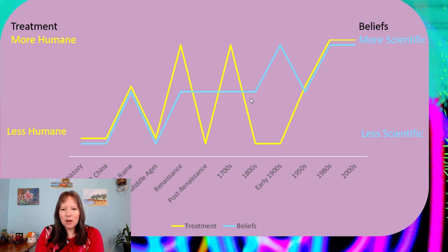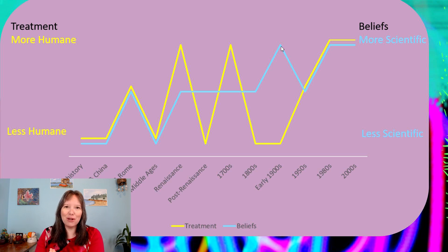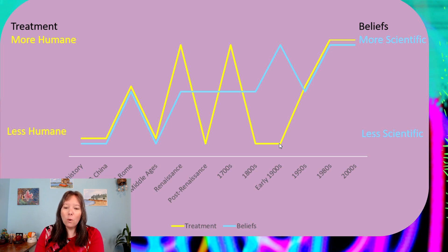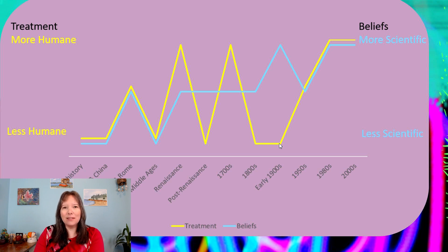When we get to the early 1900s, the blue and yellow lines diverge. We're rapidly getting a much more scientific viewpoint through breakthroughs in psychology and neuroscience — understanding that there might be an organic cause, perhaps due to the brain or hormones. But we moved quickly from the second phase of asylums to very forceful medical interventions, including lobotomies, electric shock therapy administered against consent, and forced sterilizations. Especially here in Alberta, forced sterilizations continued well past any other province in Canada, affecting people with epilepsy or significant mental illness. You can really see how that is not considered humane.